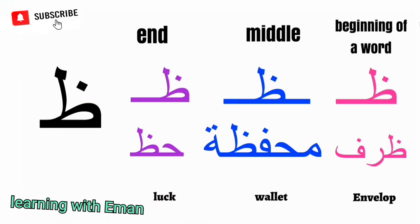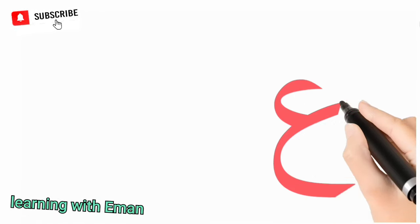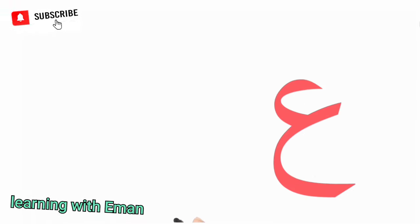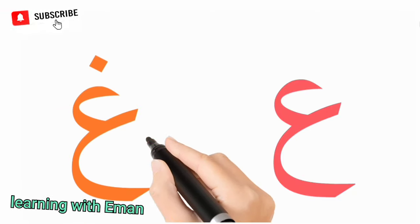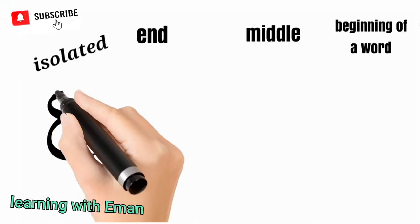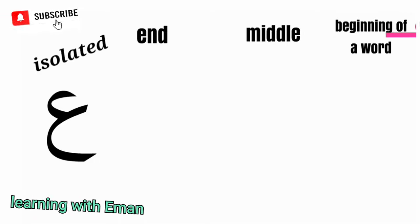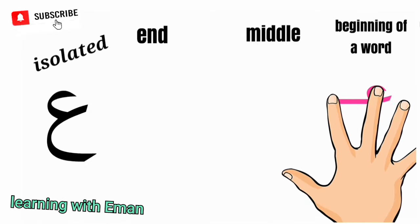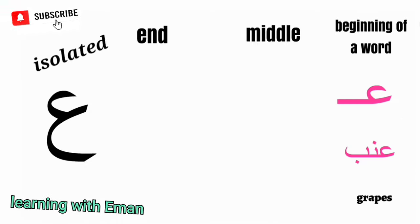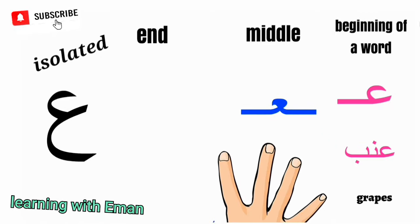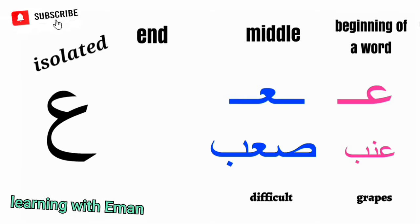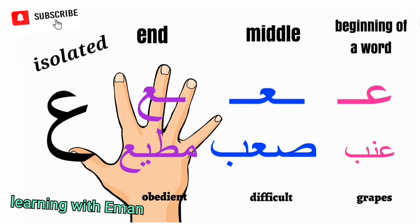The next letters of the Arabic alphabet are Ayin and Ghain. These two letters look very similar except that Ayin has no dots and Ghain has one dot on top. Ayin doesn't have an English equivalent — it is a very throaty sound. At the beginning of a word, like in a word meaning grapes. At the middle of a word, like 'Sa'ab', meaning difficult. At the end of a word, like 'Muti'a', meaning obedient.